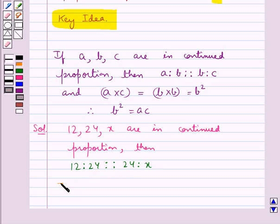So, the product of extremes, that is 12 multiplied by x, is equal to the product of means, that is 24 multiplied by 24.